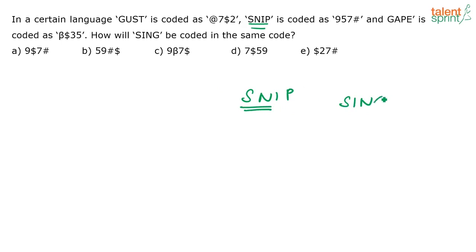Now, in this word SING, you have S, I, N. These three letters are common. Only P is becoming G. Now, look at this word SNIP and GAPE which is the common letter here. The common letter here is P. If you compare both these words, the common letter here is P. And if you actually compare the codes, you can see that the only common thing between these two codes is 5. So, I can say the code for P is 5.